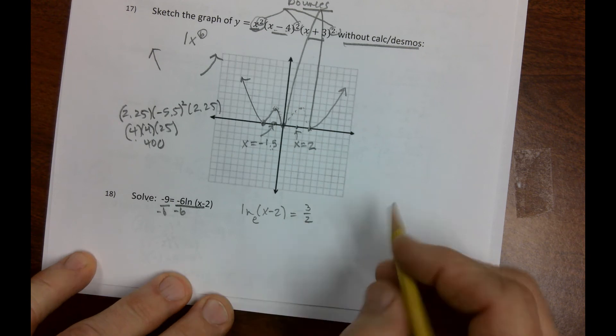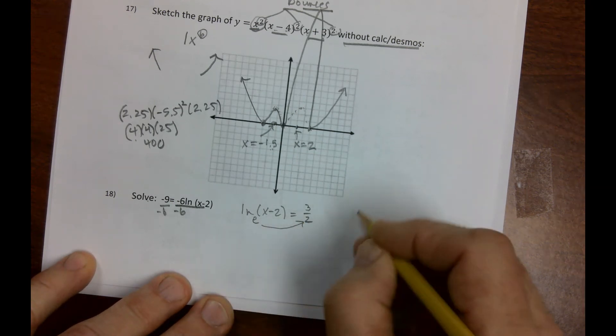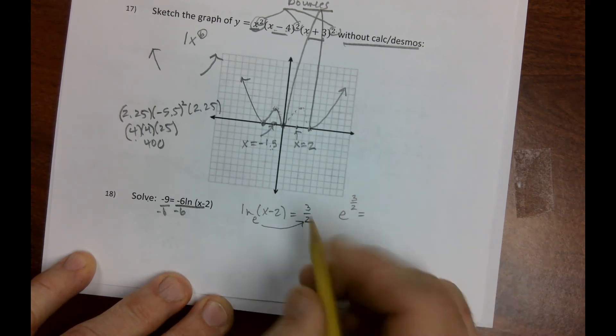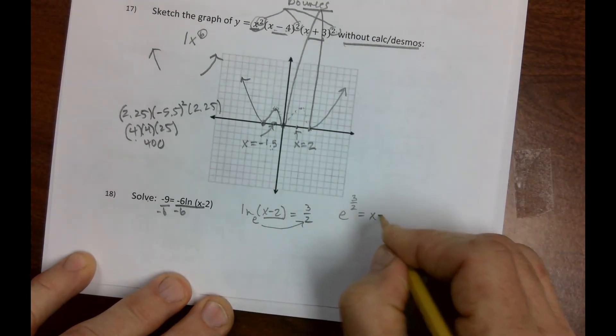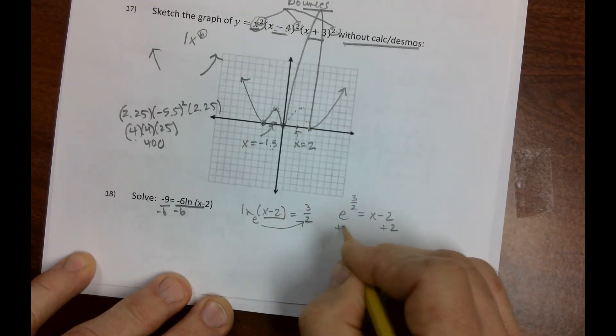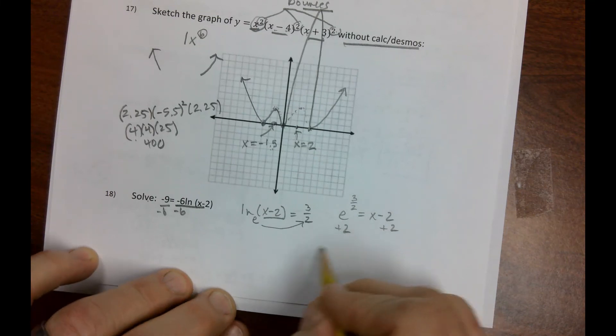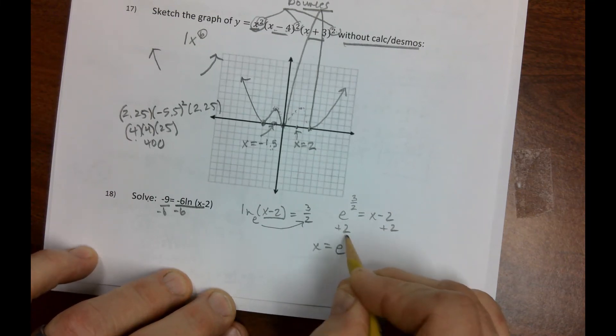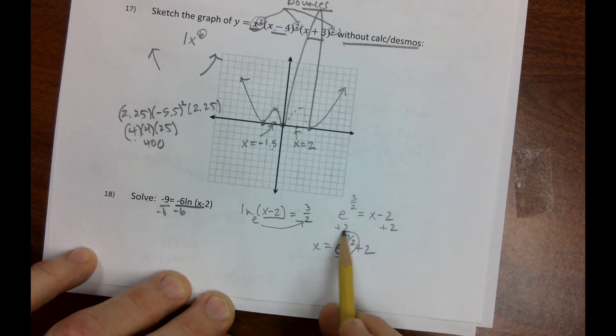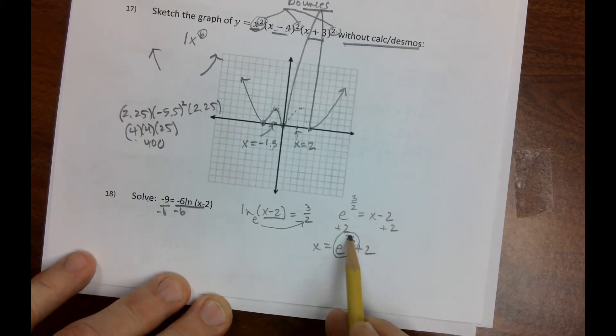Now, we're going to twist this thing into an exponential equation. Equals x minus 2. Now, I'm just going to add 2 and add 2. And as strange as it is, x equals e to the 3 halves power plus 2. If you wanted to, you could type that in your calculator. 2.71 to the 3 halves power. Get a decimal. Add it to 2. But I'm not going to worry about that for now.